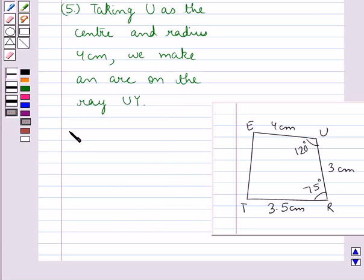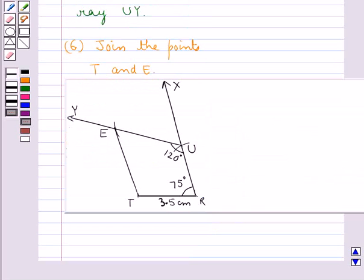So, in the final step, we will join the points T and E and hence we get the quadrilateral TRUE.